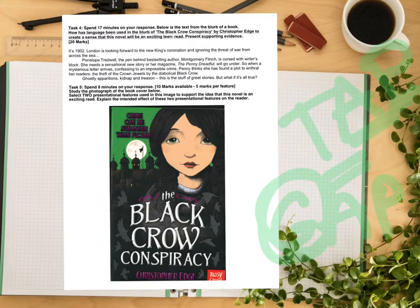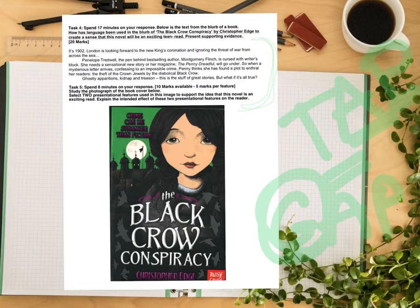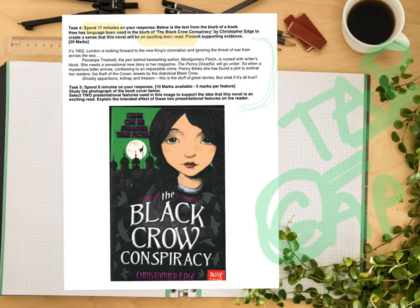As you're reading through the blurb on the book cover, please make sure you're hunting for techniques. It's quite short, it's snappy, and you're told that you have 17 minutes. The question is: how has language been used in the blurb of The Black Crow Conspiracy by Christopher Edge to create a sense that this novel will be an exciting teen read? Look at the clues they're giving you — exciting teen read — those are your question terms. Also don't forget things like tone and punctuation.